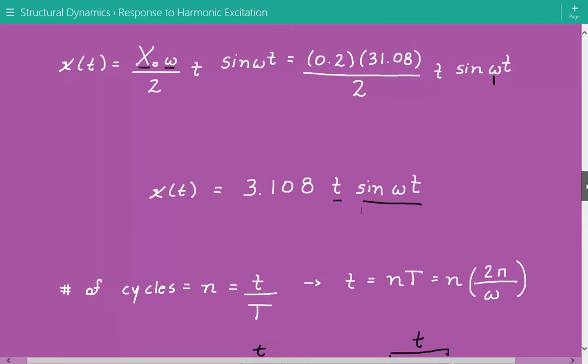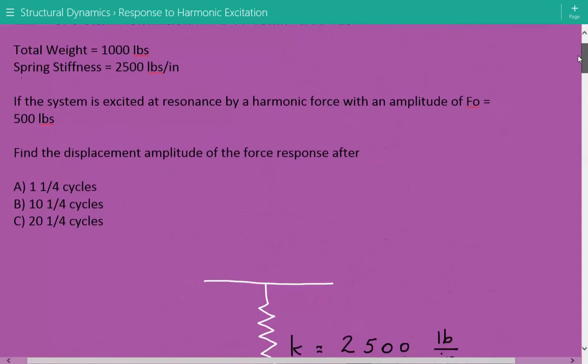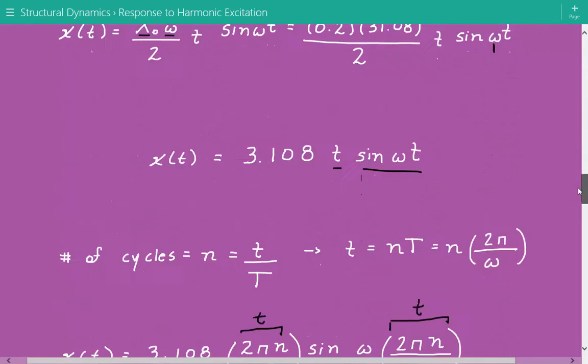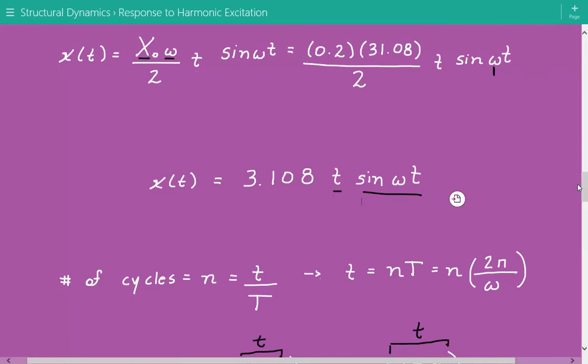We need to find the displacement amplitude after a certain number of cycles. For the number of cycles, we need to get the time t in terms of number of cycles. The number of cycles equals t divided by the natural period. Rearranging, t equals number of cycles times natural period. The natural period equals 2 pi divided by omega, so t equals 2 pi n divided by omega.